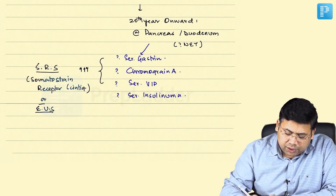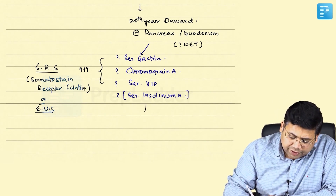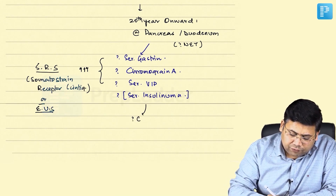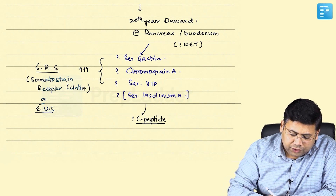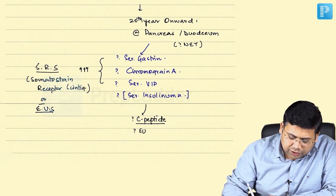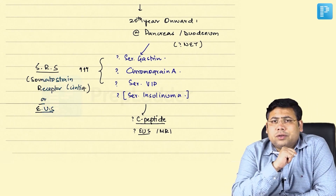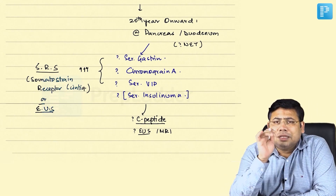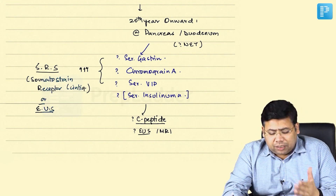If serum insulin levels are found to be elevated, you confirm with C-peptide levels and can proceed to EUS or conventional MRI. Note that somatostatin receptors are not present on all insulinomas, which is why SRS is not used for them. You then proceed to respective management if findings are positive.